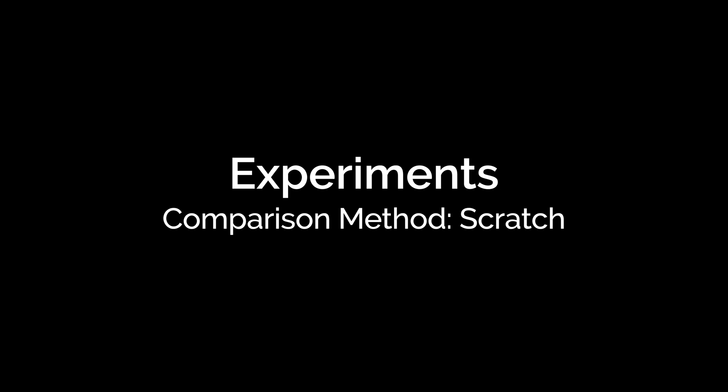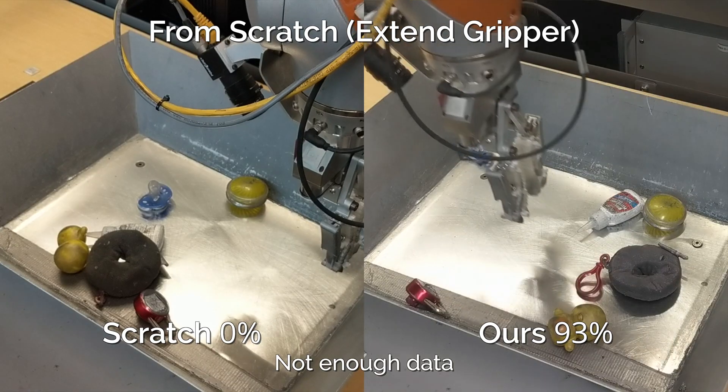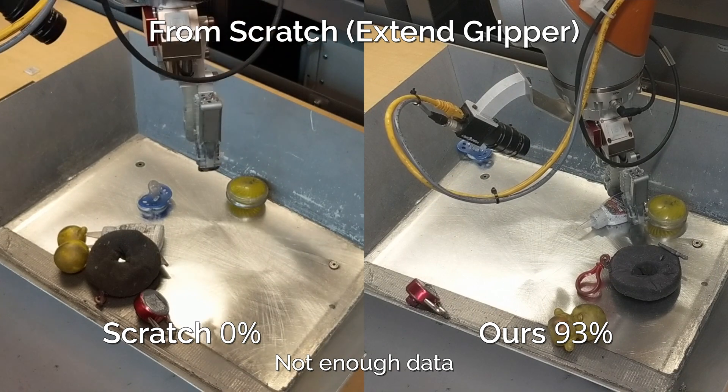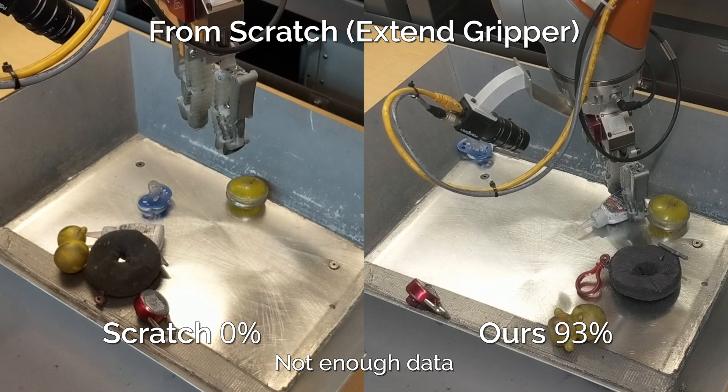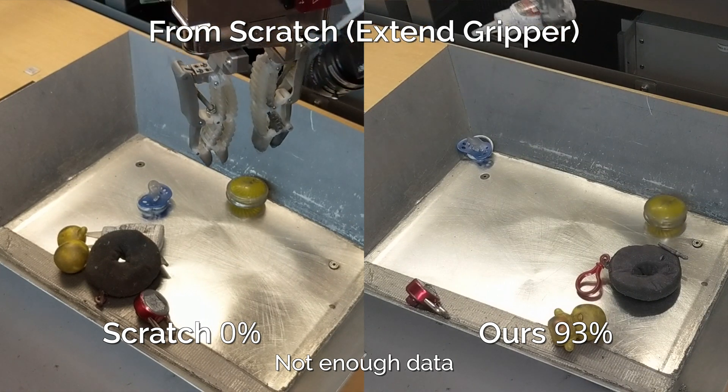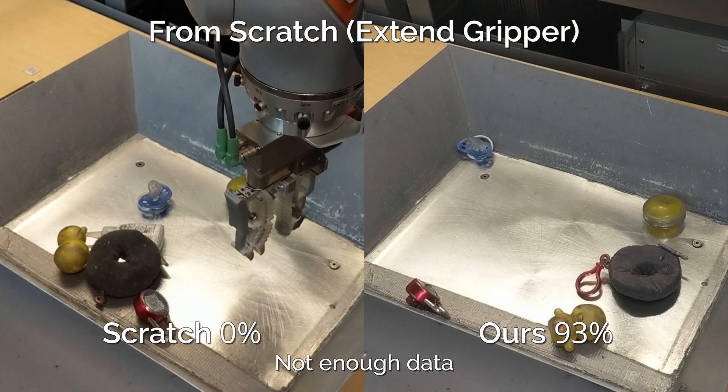We first compare our method to training a randomly initialized Q function using the same dataset of 800 grasps which we used for fine-tuning. As you can see in the extended gripper example here, 800 grasps is just not enough data to train a Q function from scratch. This experiment highlights the advantage of initializing fine-tuning using the Q function parameters from a similar task.